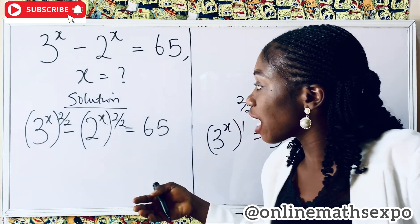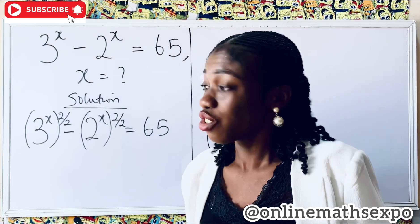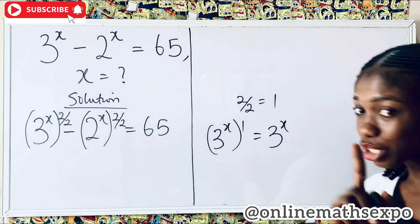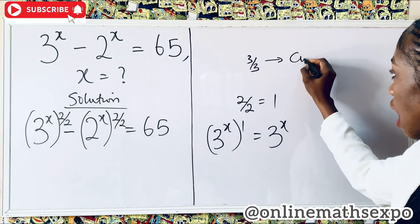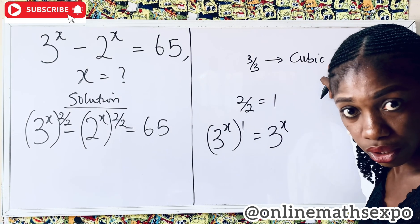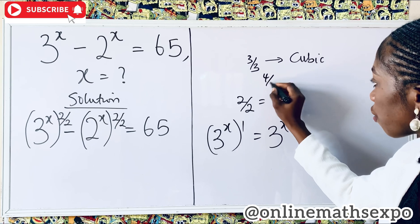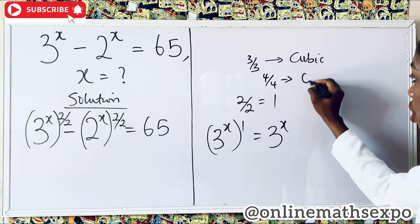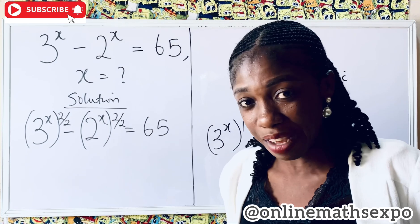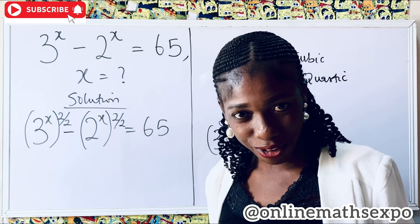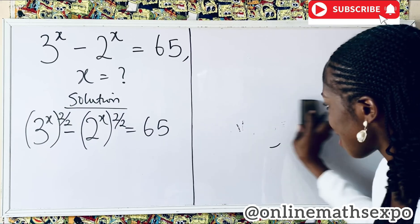You can ask: what if I choose to use 3 over 3? Students are free to use 3 over 3, or even 4 over 4. But you have to be careful — if you use 3 over 3, you should be familiar with cubic polynomials, those where the highest power is 3. If you use 4 over 4, you should be familiar with quartic polynomials. To make the work much easier for us, let's use 2 over 2.